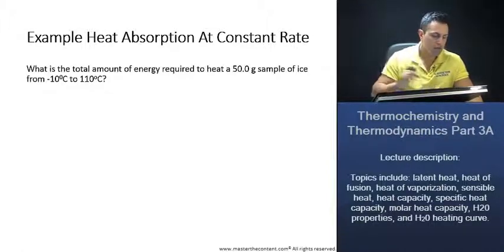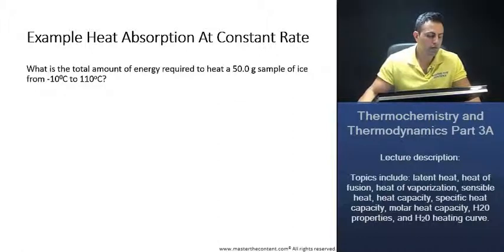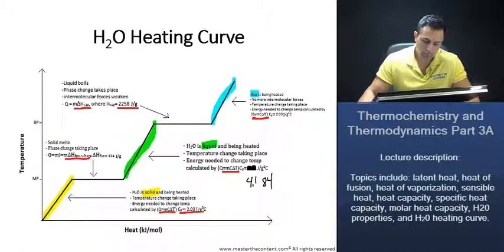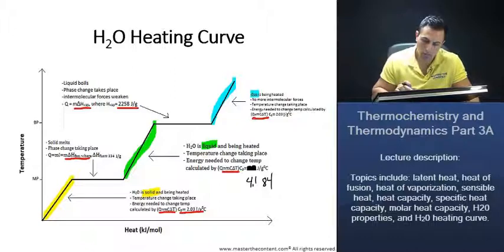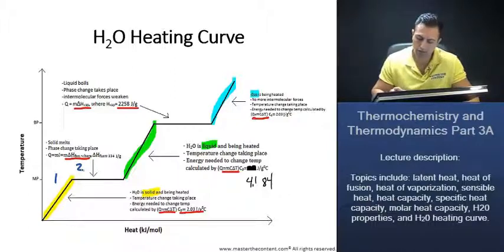Here, we're being asked: what is the total amount of energy required to heat a 50-gram sample of ice to 110 degrees Celsius from negative 10 degrees Celsius? Let's look back at our heating curve for a second and see how many steps we're going to have to go through. If we're at negative 10 degrees Celsius, that means we're solid. It's going to be one phase to go to zero degrees Celsius right here. Then we're going to have to go through a phase change right there.